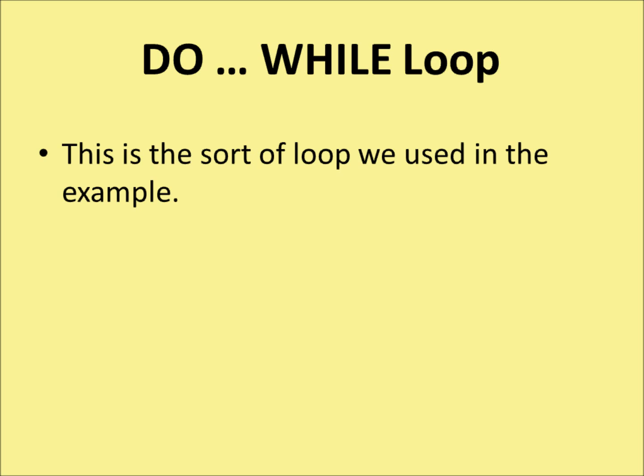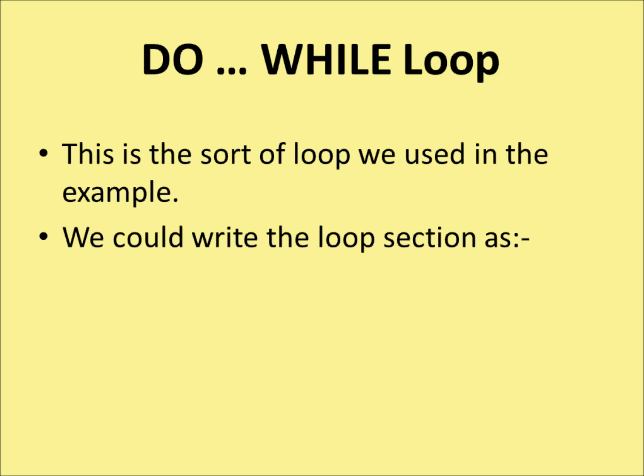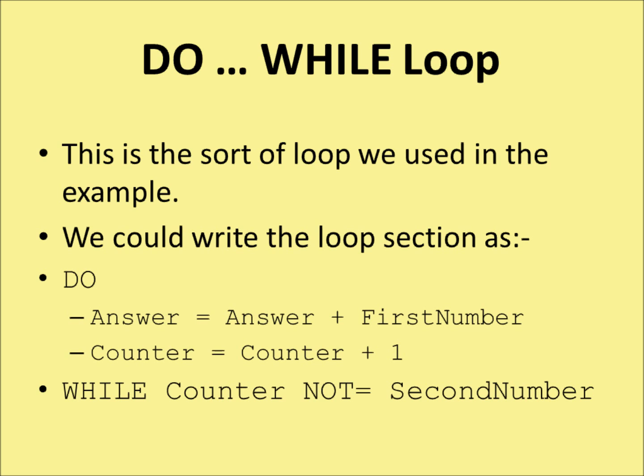There are three kinds of loops. The first is the do-while loop — this is the sort of loop we used in the previous example. We could write the loop section as: do answer equals answer plus first number, counter equals counter plus 1, while counter is not equal to the second number. We would go round this loop as many times as the second number dictated, adding the first number to itself that many times.